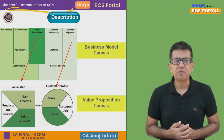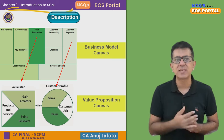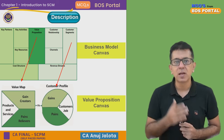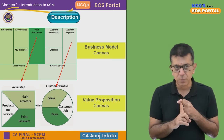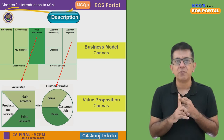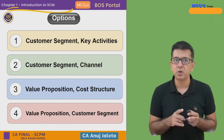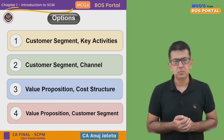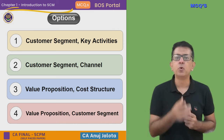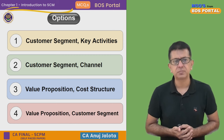So two elements from the Business Model Canvas come together in the form of Value Proposition Canvas — these are Value Proposition and Customer Segment. Therefore, out of the four options, the answer should be number four: Value Proposition and Customer Segment. That is the correct answer.